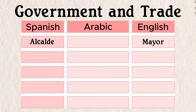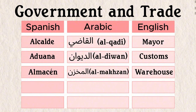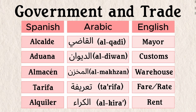Arabic was the official language of government and trade in Al-Andalus, so many words related to these important functions entered Romance vernacular: alcalde (mayor) from al-qāḍī; aduana (customs) from ad-dīwān; almacén (warehouse) from al-makhzan; tarifa (tariff/fare) from Tarifa; alquiler (rent) from al-kirā'.